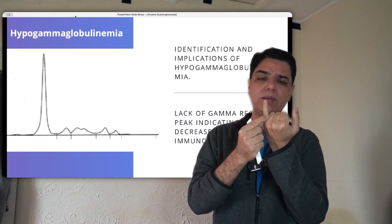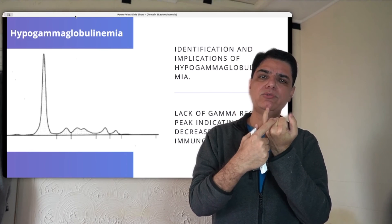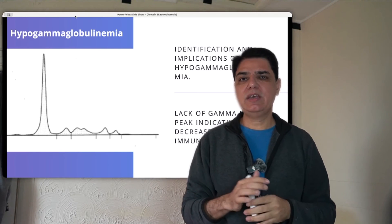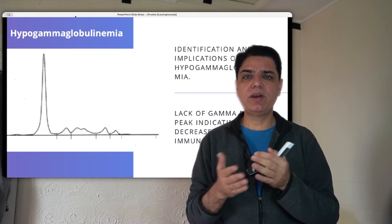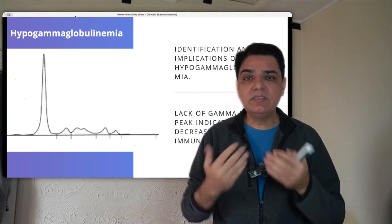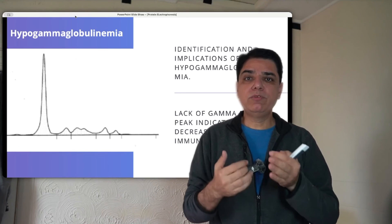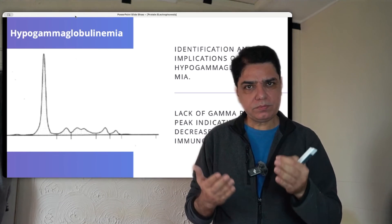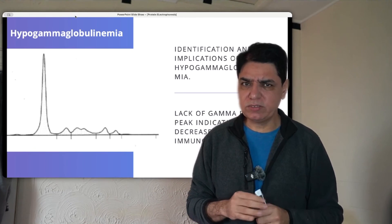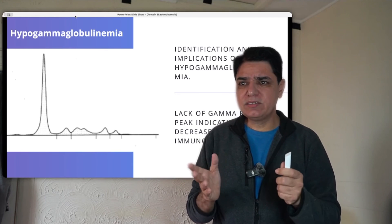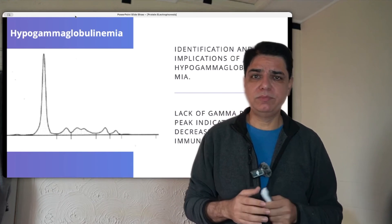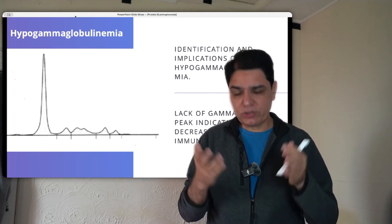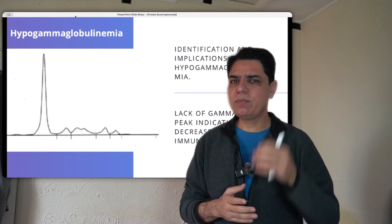In summary, a normal protein electrophoresis shows a sharp albumin spike followed by three similarly sized humps — alpha-1, alpha-2, beta — and then a slightly broader gamma globulin section. Increases or decreases in these sections indicate different diseases, as explained in this video. I hope you enjoyed this video; if anything is unclear, ask in the comments below. If you want more interesting topics covered, let me know in the comments. Have a good day, take care, and bye.